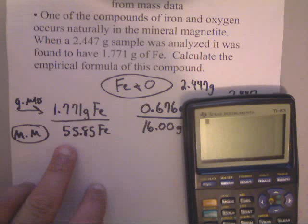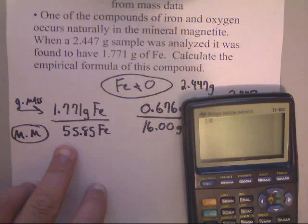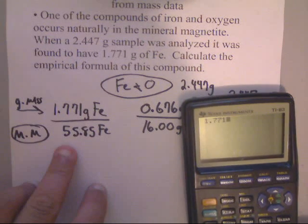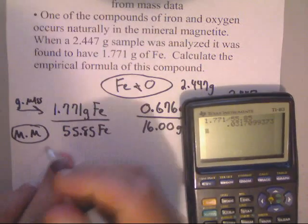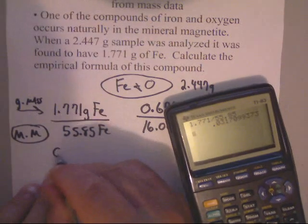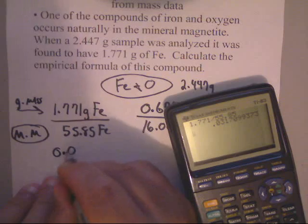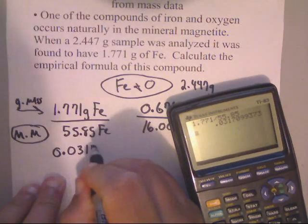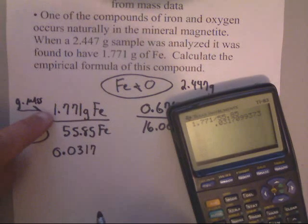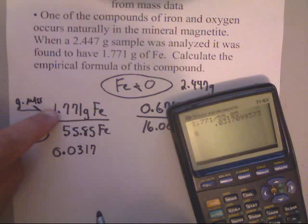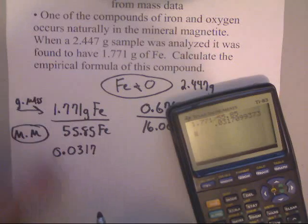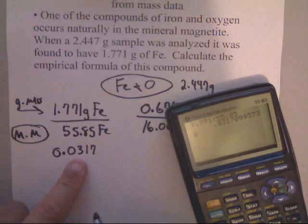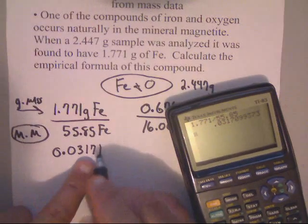So basically, when we type this in, 1.771 and we divide it by 55.85, we get 0.0317 and notice that there is four sig figs. So I want to try to get four sig figs. Now remember, that's going to be moles of Fe.